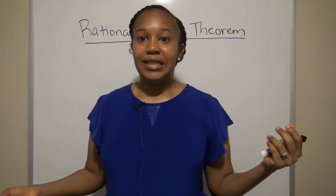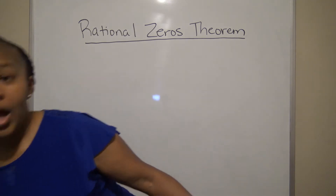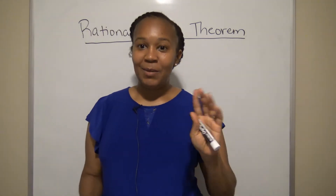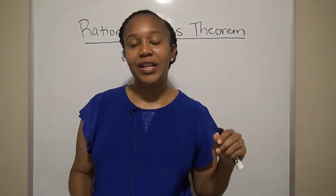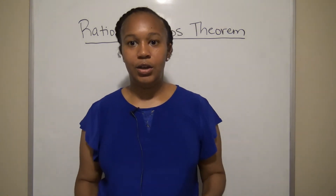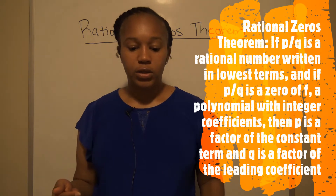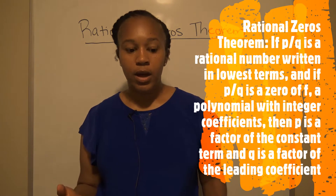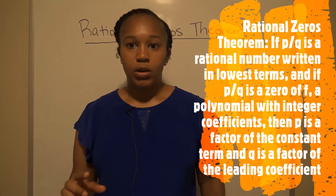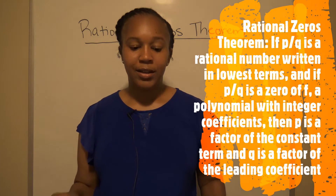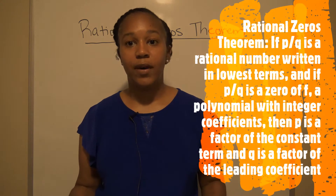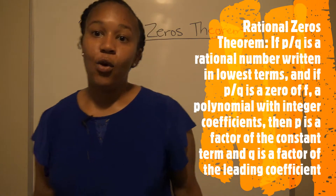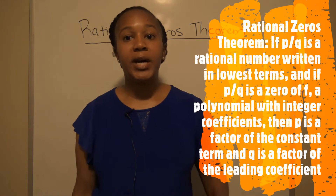The theorem is a bit long, so I'm going to read it from my notebook. Here's the formal definition: if p over q is a rational number written in lowest terms, and if p over q is a zero of f — a polynomial with only integer coefficients — then p is a factor of the constant term and q is a factor of the leading coefficient.